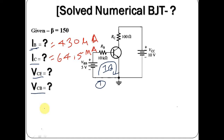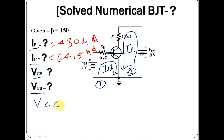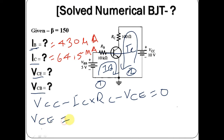This was loop number one. Now let us apply KVL on loop number two. The current flowing through loop two is IC, which we have already found. Applying KVL: VCC minus IC times RC minus VCE equals zero. So the expression for VCE is: VCE equals VCC minus IC times RC.